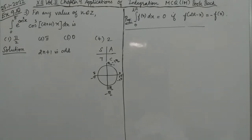Hello students, this is lesson 5.10 number 3. For any value of n belonging to Z, we have the integral from 0 to π of e^(cos²x) times cos³(2n+1)x dx. We need to find the value.